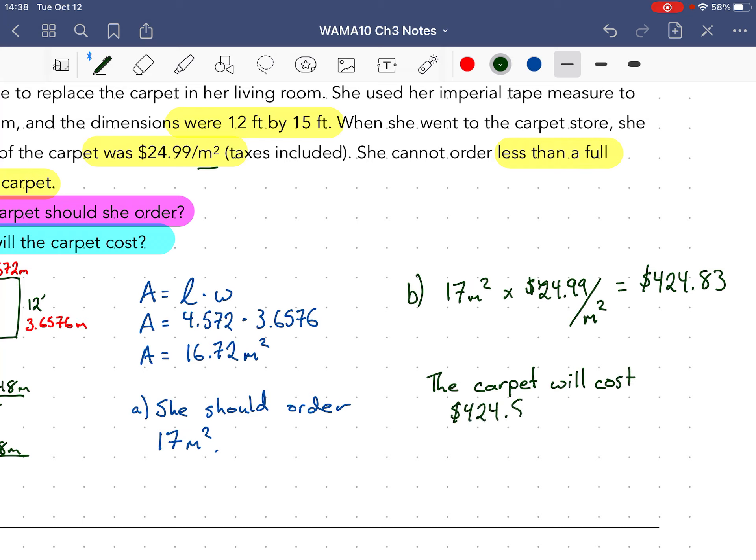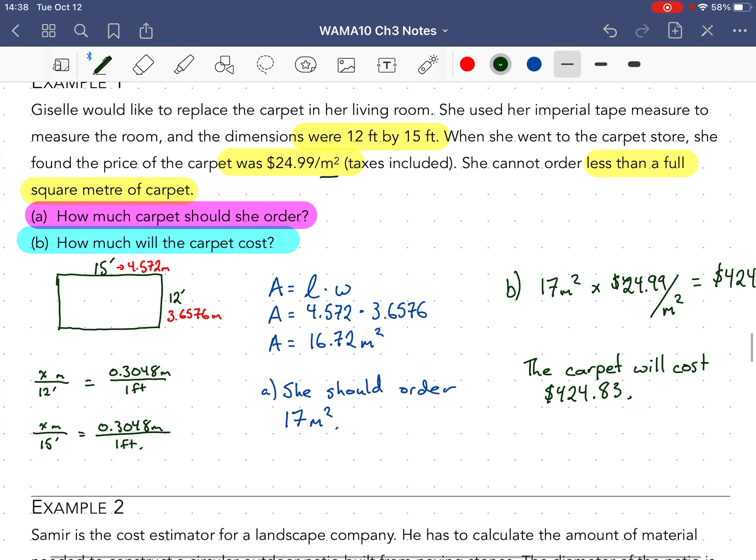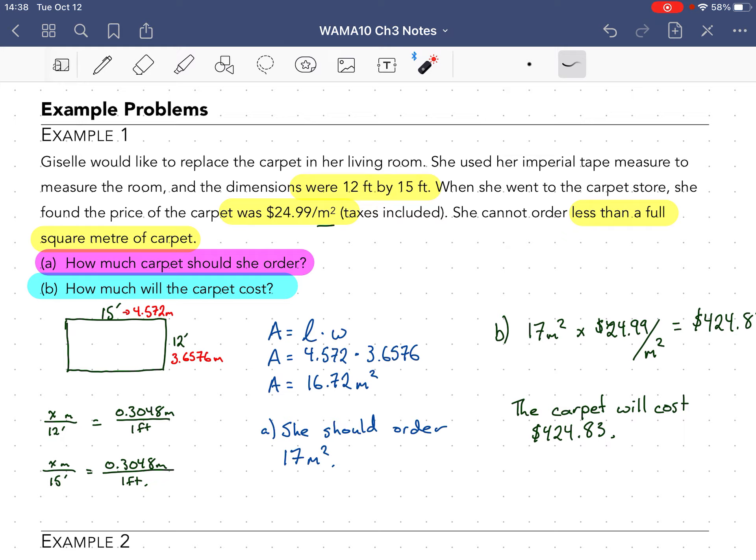So the carpet will cost $424.83 since the taxes are included. This is the work that I would like to see from you. When you read the question, identify the information that you're given in the question, look for the questions being asked, draw a picture, convert first, then do your areas, make sure you answer your question. All right, that's exactly...